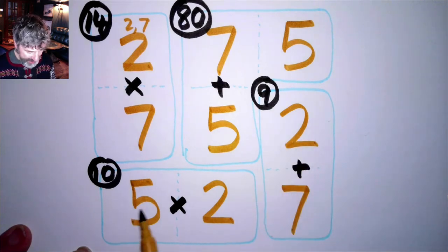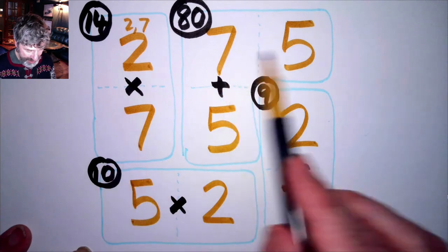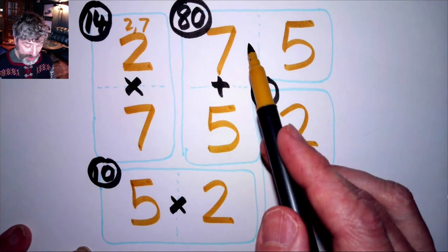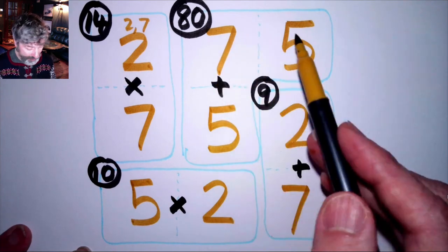Let's see if it all works. 2 plus 7 is equal to 9. 5 times 2 is equal to 10. 2 times 7 is equal to 14. 75 plus 5 is equal to 80. You notice that here I didn't have an operation, so this is just 7, 5, 75.